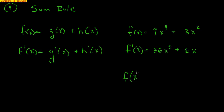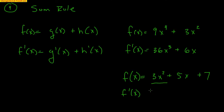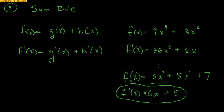Let's do one more. If f(x) = 3x squared plus 5x plus 7, it's almost like three functions. The derivative of 3x squared is 6x, because 2 falls down and 3 times 2 is 6. For 5x, there's a hidden exponent of 1 — the 1 falls down, so 5 times 1 is 5, and x to the zero is just 1, so we write nothing. The derivative of the constant 7 is 0. So the final answer is 6x plus 5.